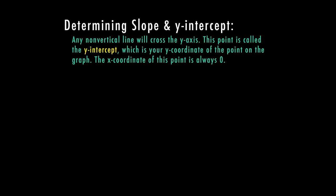Any non-vertical line will cross the y-axis. This point is called the y-intercept. This is going to be your y-coordinate of the point on the graph. And at this point, the x-coordinate is going to always be zero.